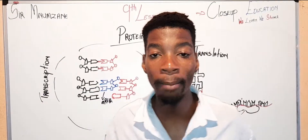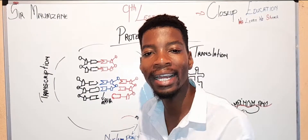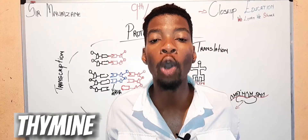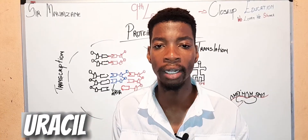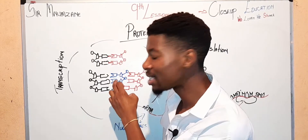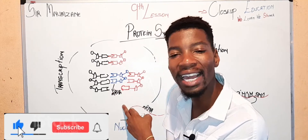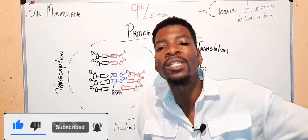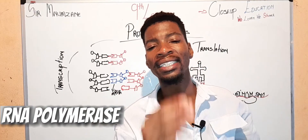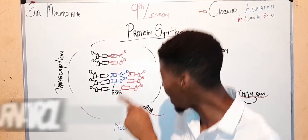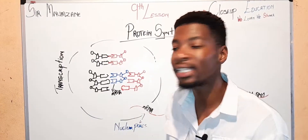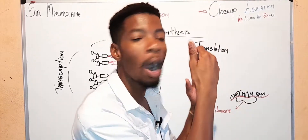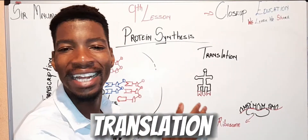Remember, this mRNA strand can never have thymine — it can only have uracil. So once this mRNA has been created from the template which has been unzipped by the RNA polymerase, it will exit the nucleus and into the cytoplasm. And that is when we start the process of translation.